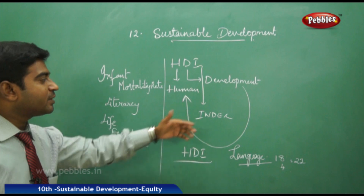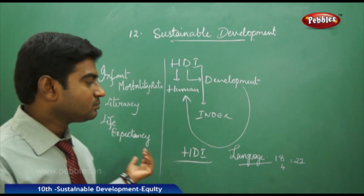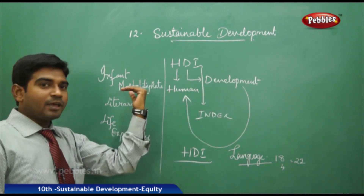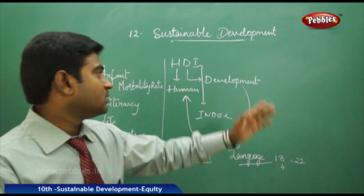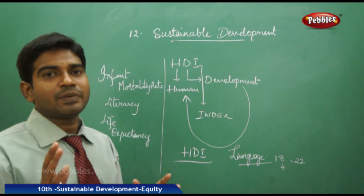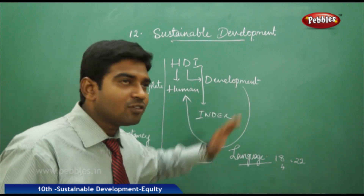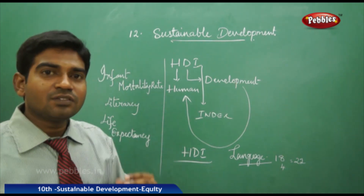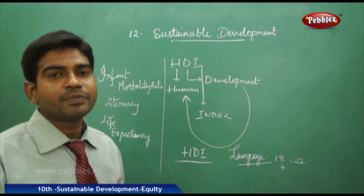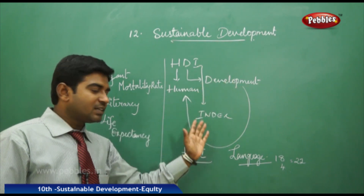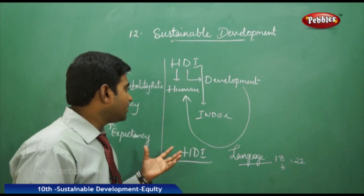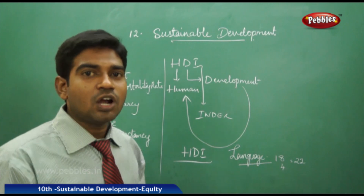Now, infant mortality rate, literacy rate, and life expectancy — are these three directly linked with the Human Development Index? Yes, they are directly linked. When these are fulfilled, human beings automatically develop. A boy from 0 to 5 years who is not surviving means there is no development. If he cannot read and write, he cannot utilize his bank accounts or anything properly — that is a negative point. If he dies before 40, he cannot lead his family properly. So HDI shows that all these criteria are fulfilled properly, leading to the success of human beings in their day-to-day life.